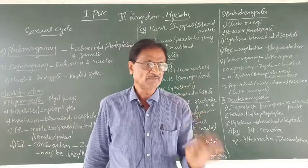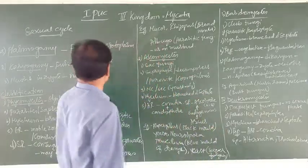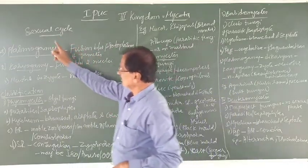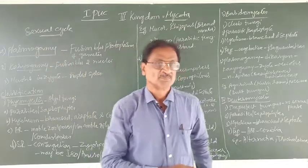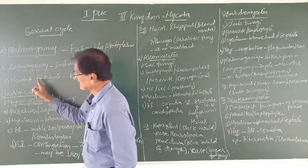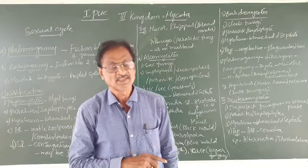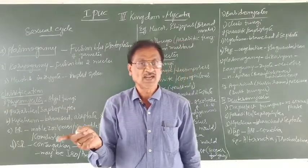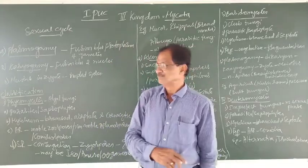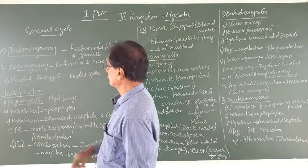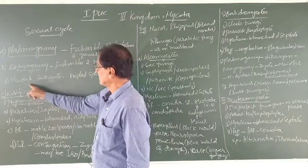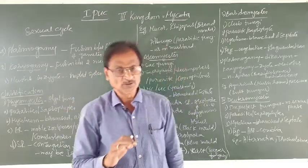The only thing left from the last class was the sexual cycle. Remember, in Fungi the sexual phase is unique. The sexual reproduction involves the following three steps: plasmogamy, karyogamy, and then meiosis. Now let us know them one by one.